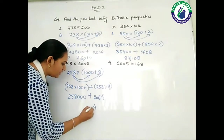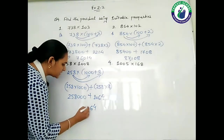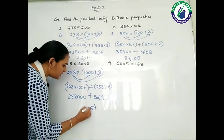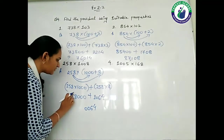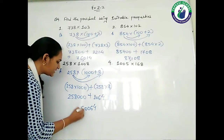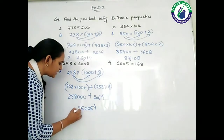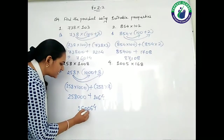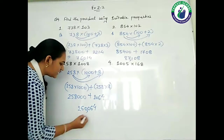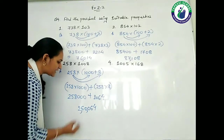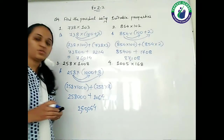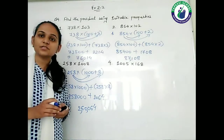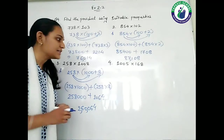We need to add them. So 258,000 plus 2,064. Adding: 4, 6, 0, 8 plus 2 is 10, 1 plus 5 is 6, and 2. So the answer is 260,064.